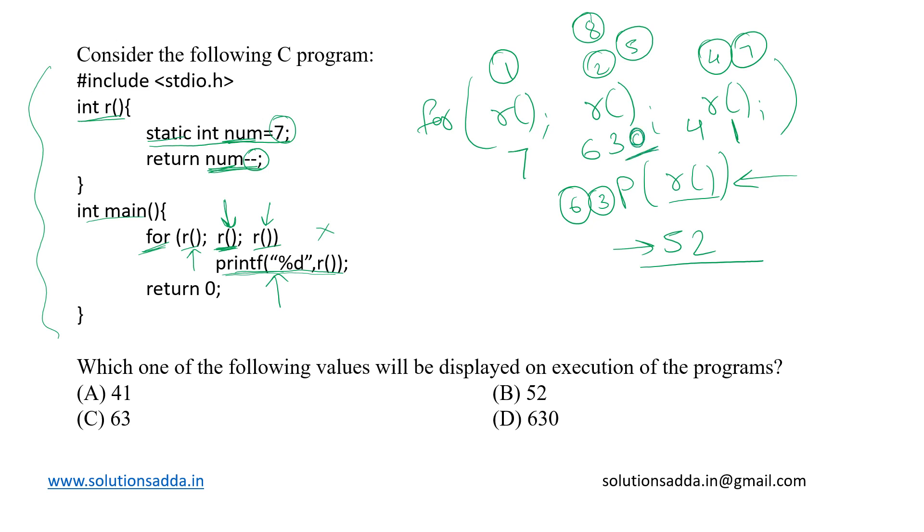Now since the value has been returned as 0 so we will break off, the condition is no more satisfied and the final output we got is just 52. We are out of the loop now and no more function calls will be made. So the output we got on the screen is 52. So that is our answer.